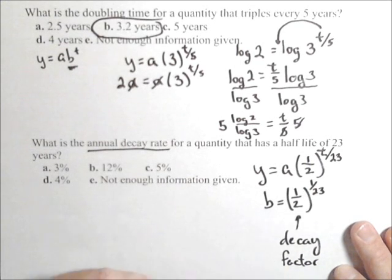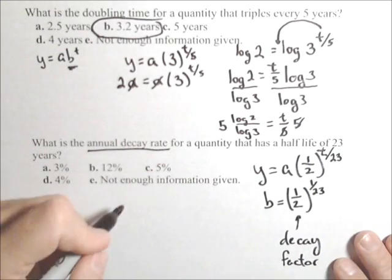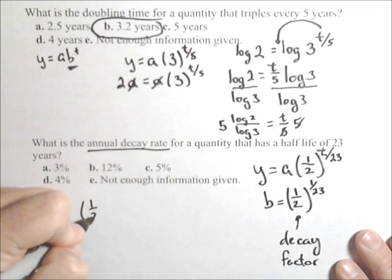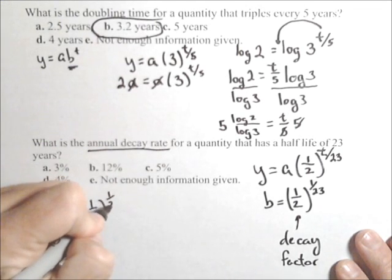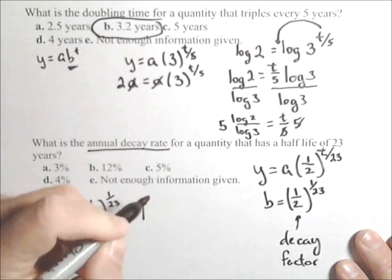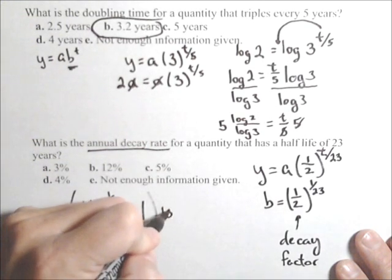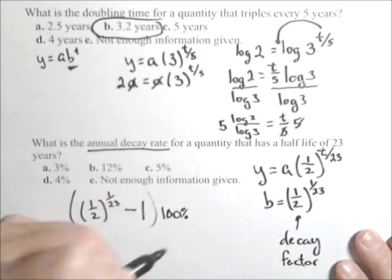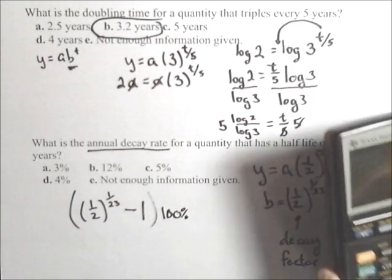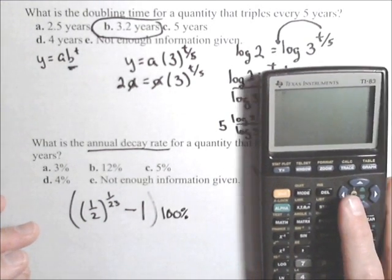So, we have to take this, then subtract one, and turn it into a percent. So, we're going to take one half to the one 23rd. We're going to subtract one to account for the decay, and multiply by 100%. The minus one is what turns it into a rate.